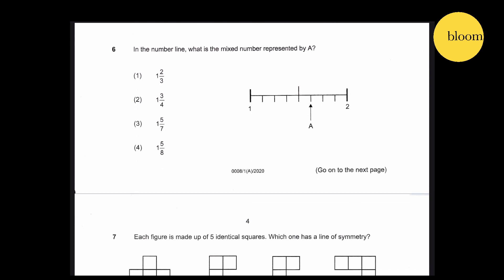Question 6: In the number line, what is the mixed number represented by A? Counting the intervals: 1, 2, 3, 4, 5, 6, 7, 8. We have a 1 here, so it's 1 and 5/8. This is the answer.